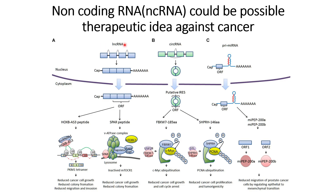Let's start with long non-coding RNAs. When long non-coding RNAs are transcribed and translated, they give rise to two different kinds of peptides: the first one is the HOXB-AS3 peptide, and the next one is the SPAR peptide.